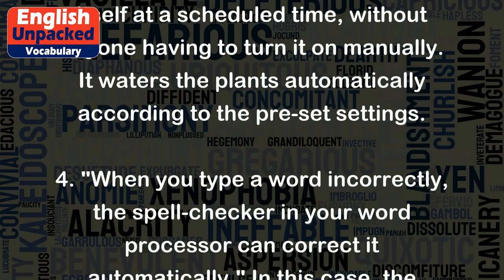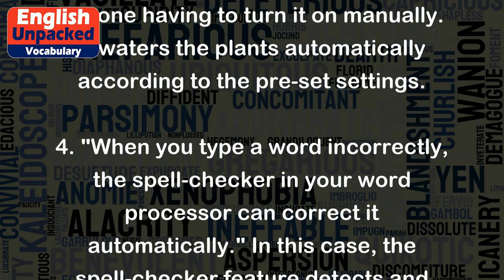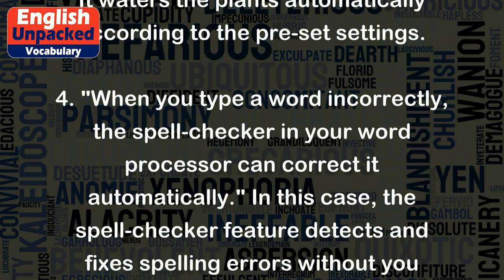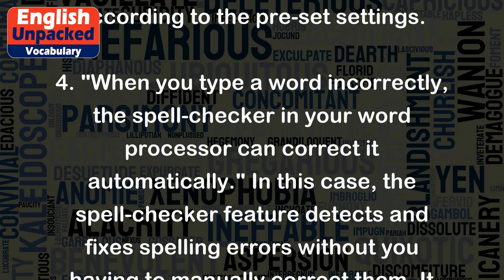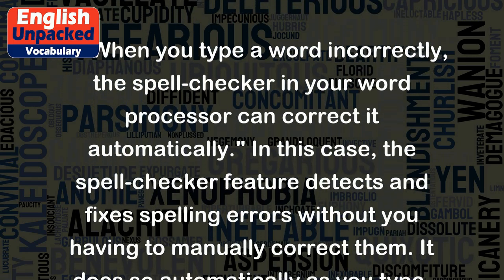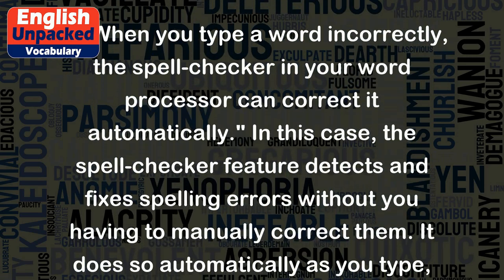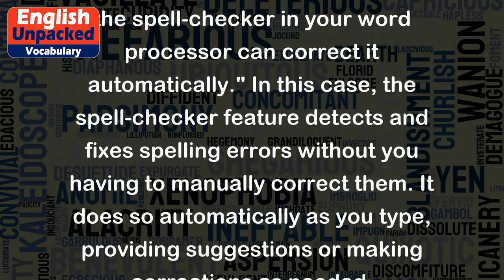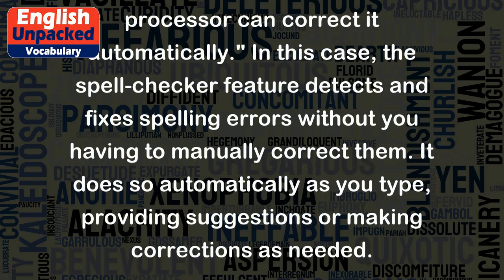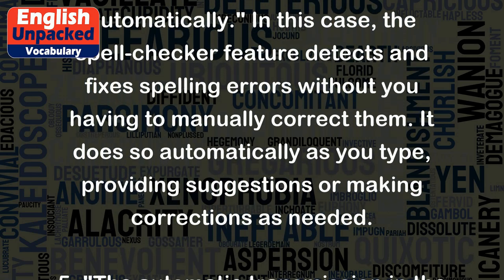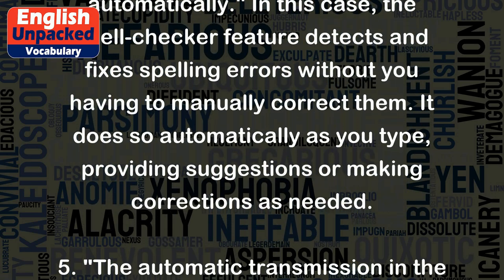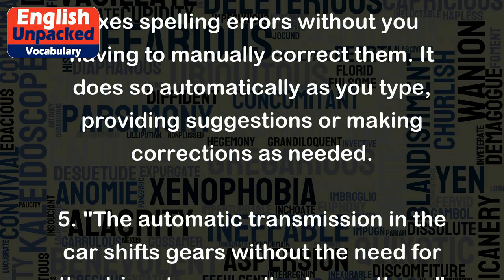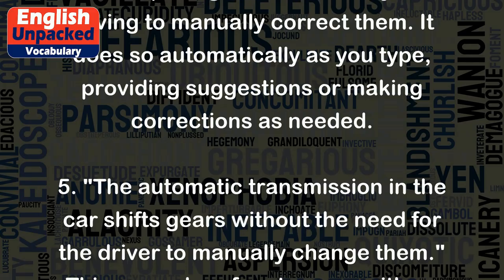Example 4: When you type a word incorrectly, the spell checker in your word processor can correct it automatically. The spell checker feature detects and fixes spelling errors without you having to manually correct them. It does so automatically as you type, providing suggestions or making corrections as needed.